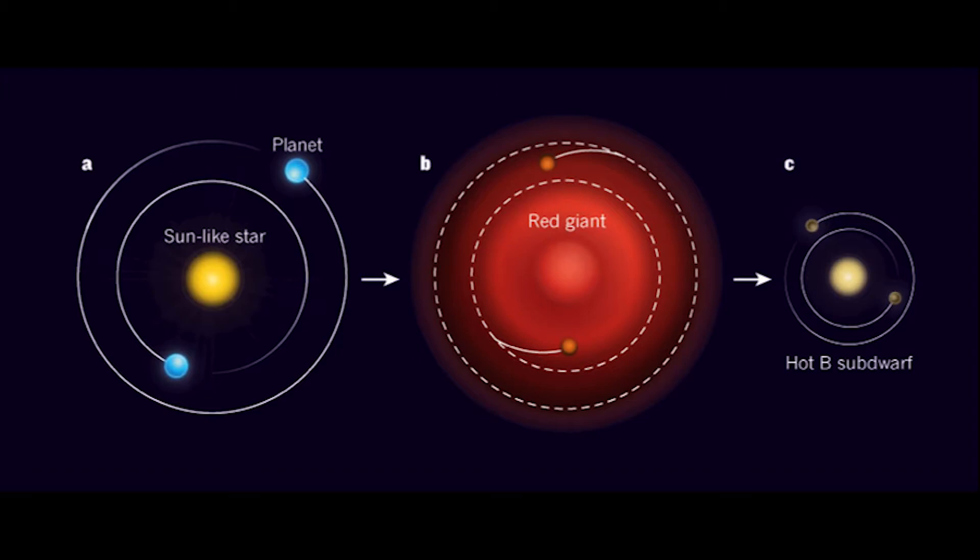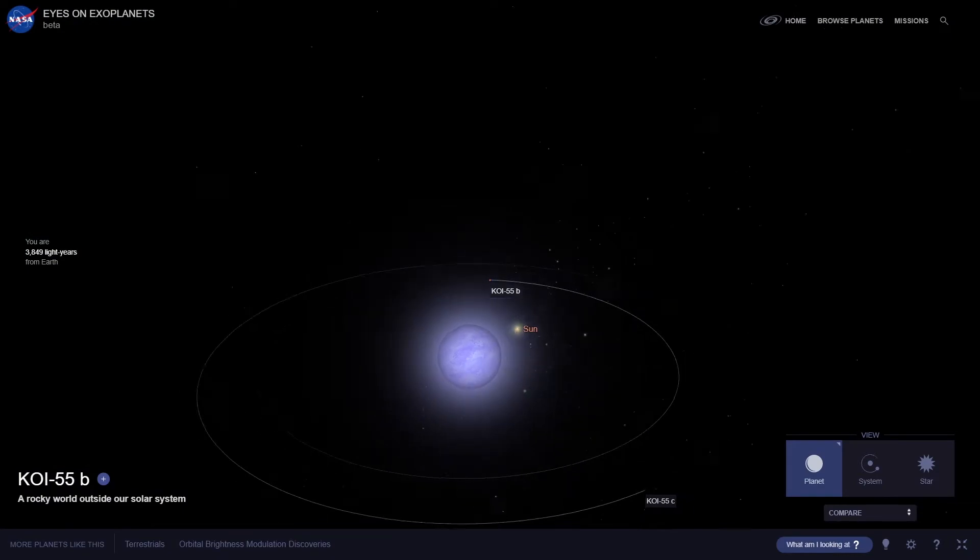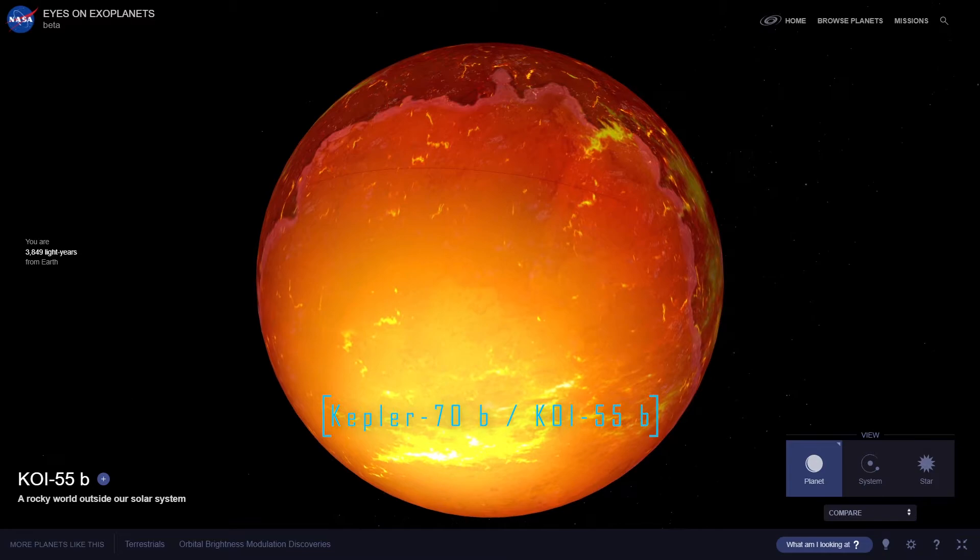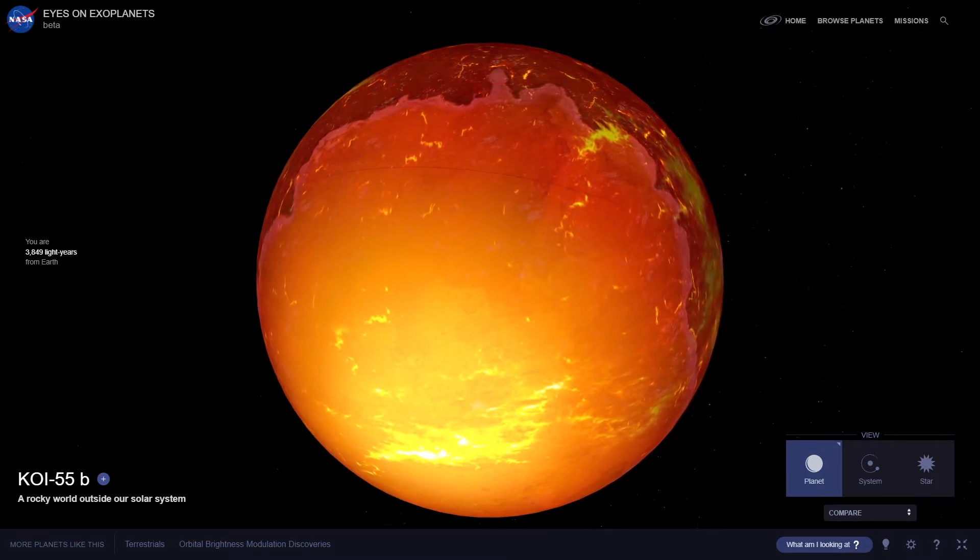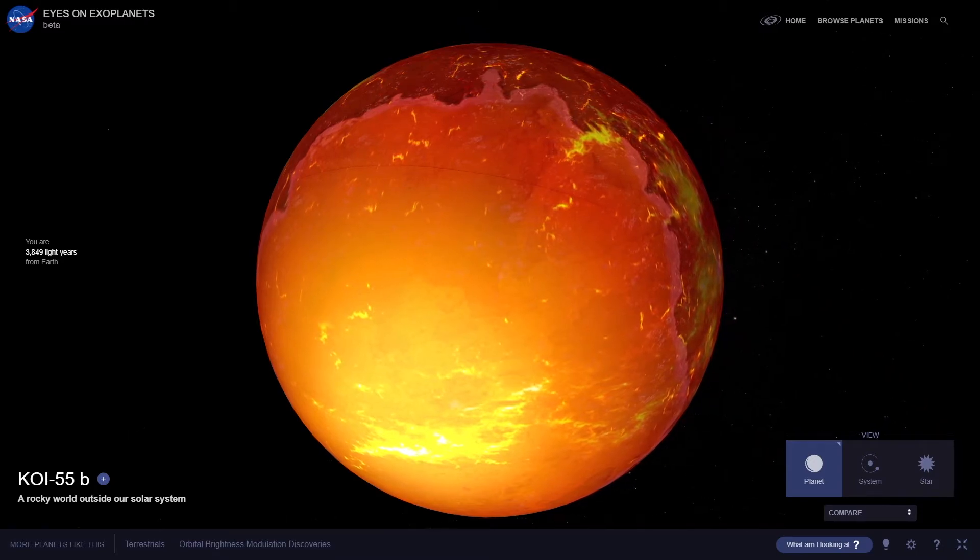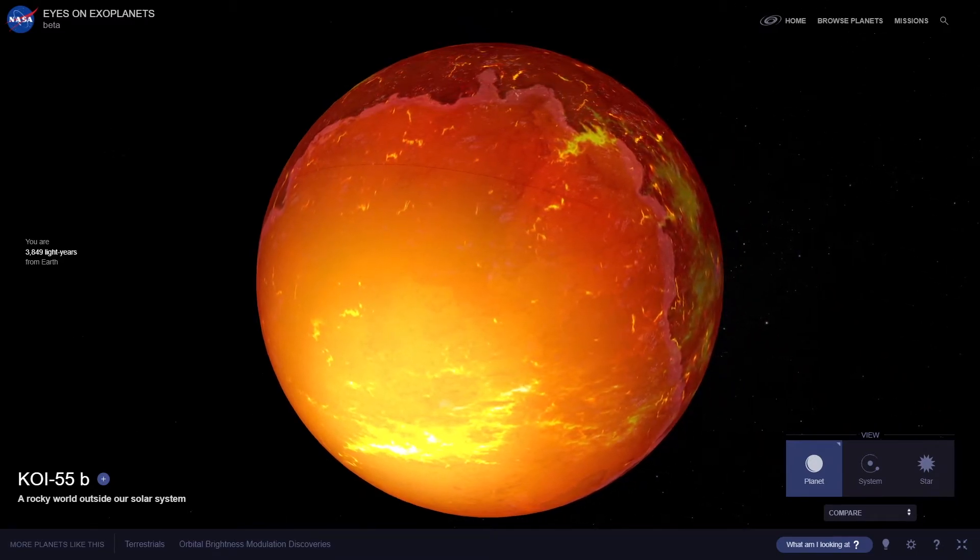Now although the planets are not inside the star, they are still extremely close to their star. In fact, the closer planet called Kepler 70b or KOI 55b is so close to the star that it takes the planet around 5 hours to completely go around it once.